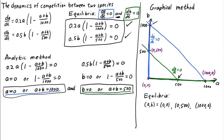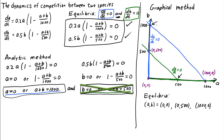Similarly, the point (0,1000) satisfies both conditions for dA/dt equals zero — A equals zero and A plus B equals 1000 — but it doesn't satisfy any of the conditions for dB/dt equals zero. So there's nothing special about those two points, and we can ignore them when looking for equilibria.